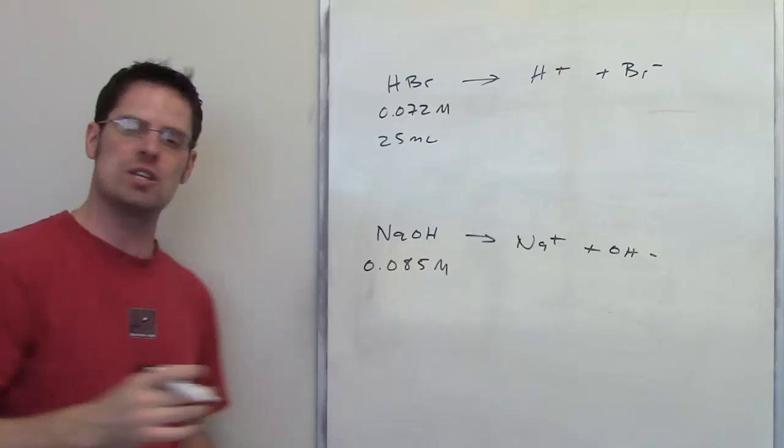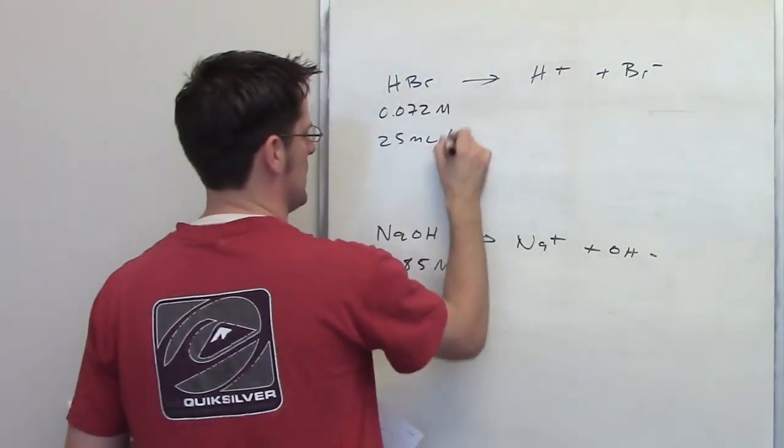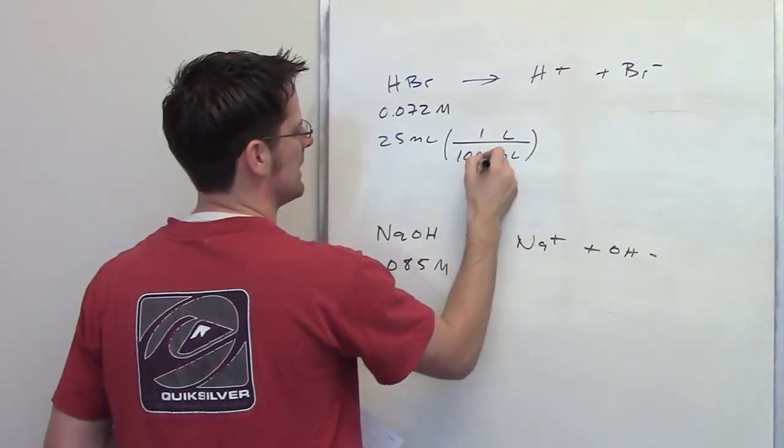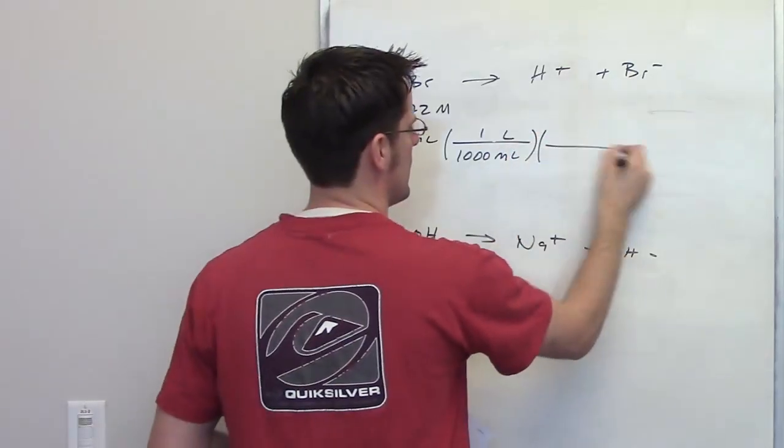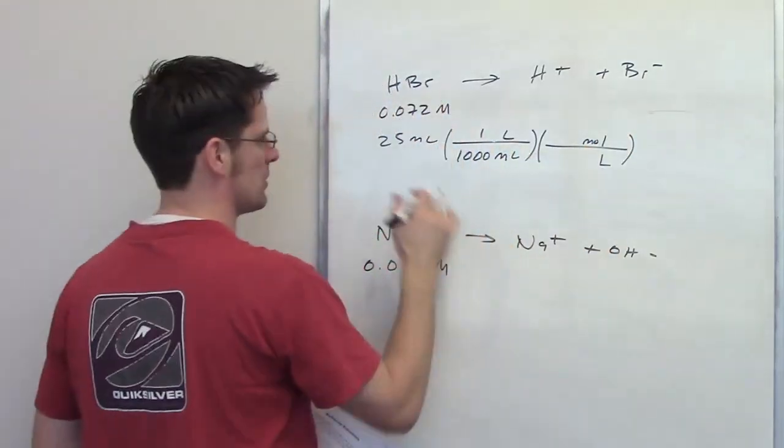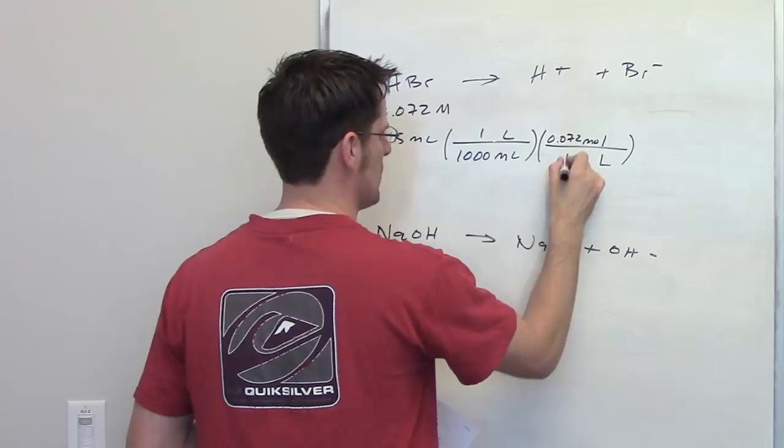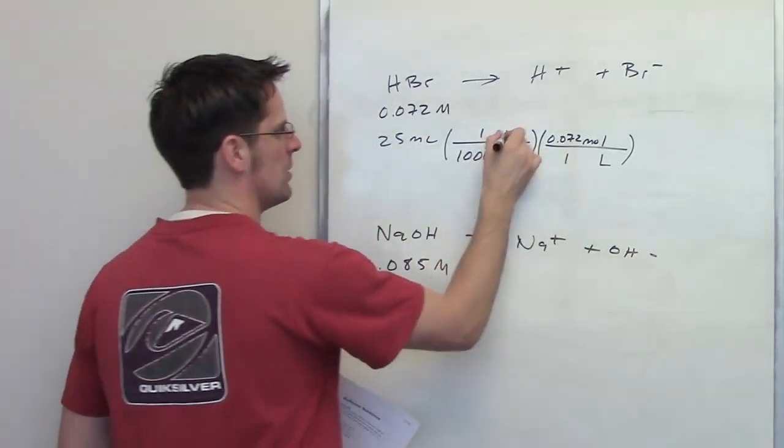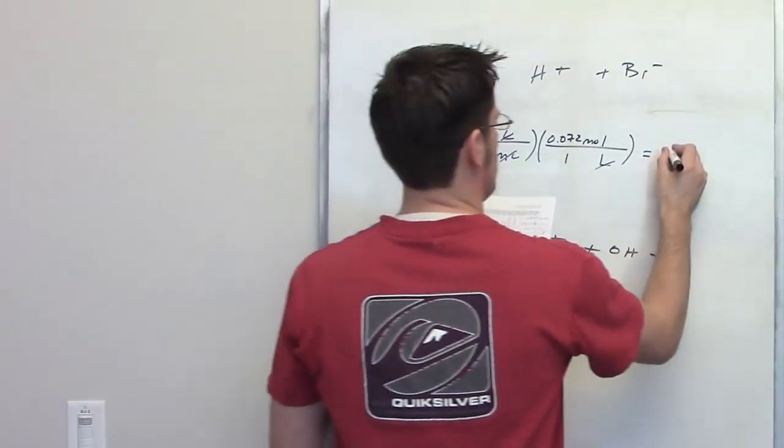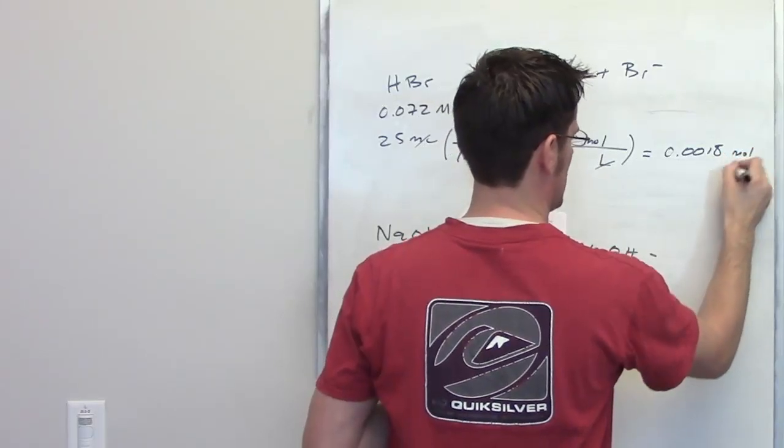How do I do that? By using the glory of math, I've got 25 milliliters of HBr. I'm going to convert milliliters to liters by remembering there's 1,000 milliliters in one liter. And then in the next set of brackets, I'll put liters in the denominator, and I'll put moles in the numerator. For this particular solution, I have 0.072 moles of HBr in every one liter of HBr. The liters cancel each other out, the mills cancel each other out, and I end up getting a final answer of 0.0018 moles of HBr.